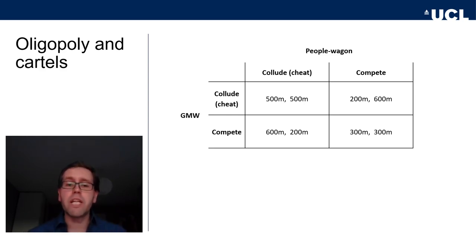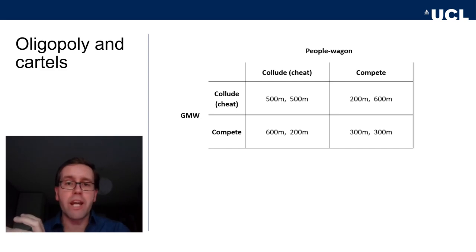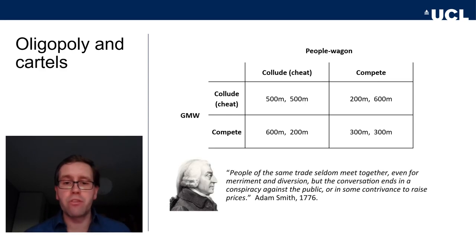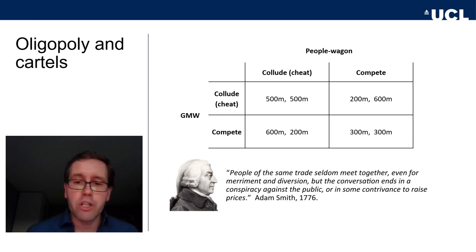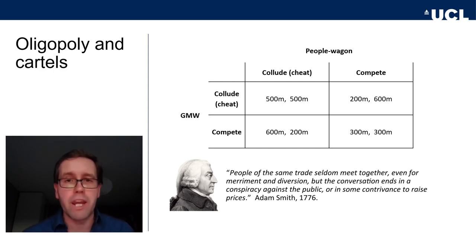This tension between competition, the potential to defect, and ending up in the competitive market equilibrium versus the collusion-cooperation equilibrium that is really beneficial for the oligopolists — this is what characterizes oligopolistic markets. This is what led Adam Smith to famously say: 'People of the same trade seldom meet together, even for merriment and diversion, but the conversation ends in a conspiracy against the public or in some contrivance to raise prices.' Smith and economists over the centuries have been well aware of this problem.